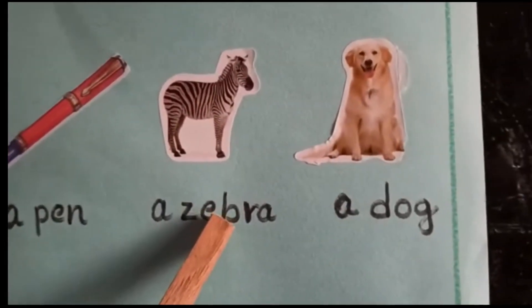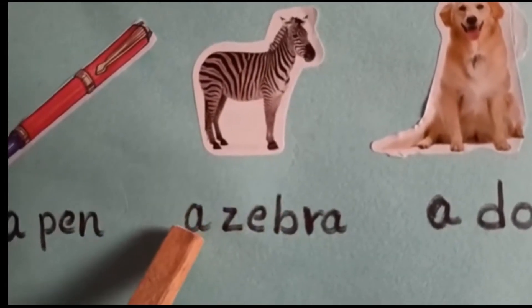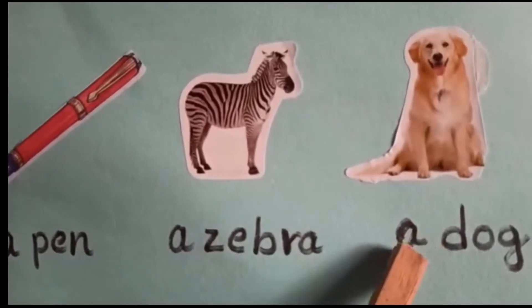A zebra. The first letter Z is a consonant. That's why you have to write a zebra. A dog.